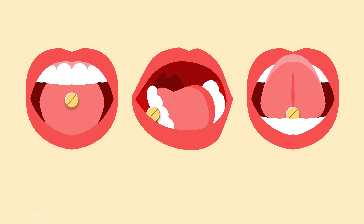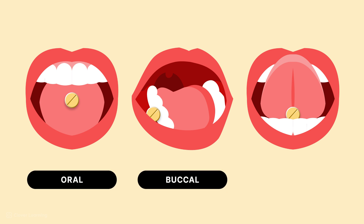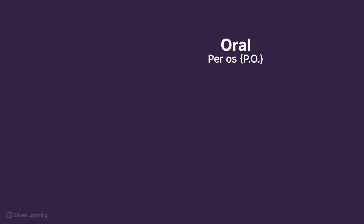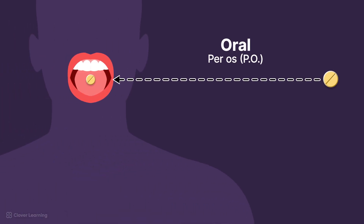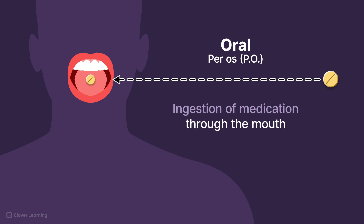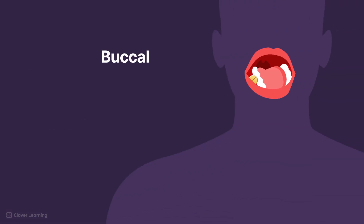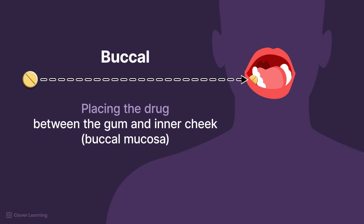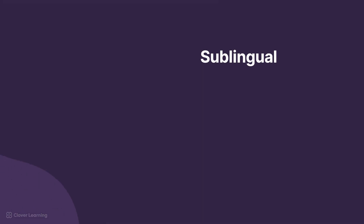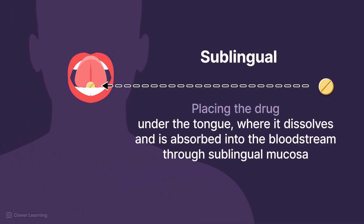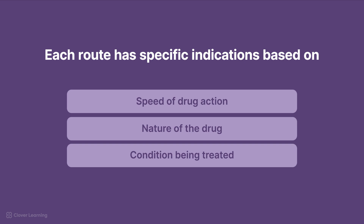In summary, there are many different routes for medication administration, including oral, buccal, and sublingual administration. Oral administration, known medically as per-os, P.O., involves the ingestion of medication through the mouth; it is swallowed or chewed and passes through the gastrointestinal tract. Buccal administration involves placing the drug between the gum and the inner cheek, or buccal mucosa, where it dissolves gradually and is absorbed directly through the mucous membranes lining the cheek. Sublingual administration involves placing the drug under the tongue, where it dissolves and is absorbed into the bloodstream through the sublingual mucosa. Each route has specific indications based on the required speed of drug action, the nature of the drug, and the condition being treated.